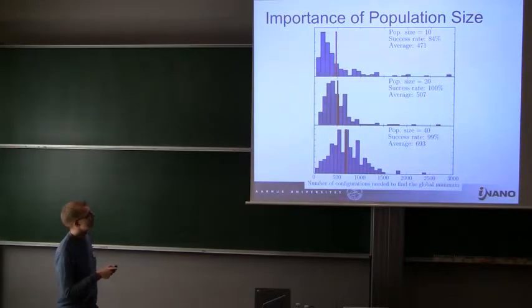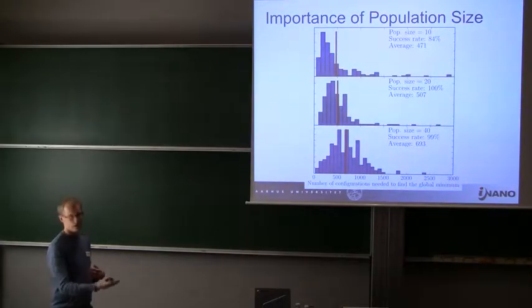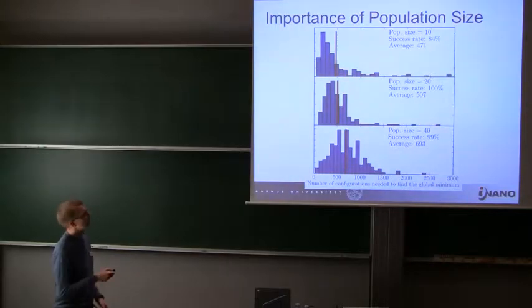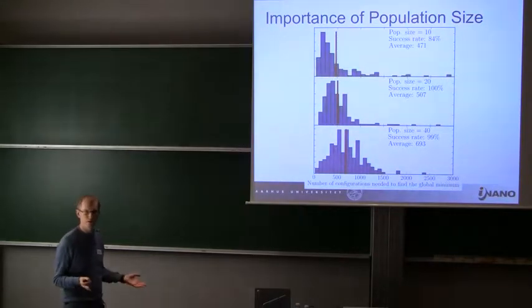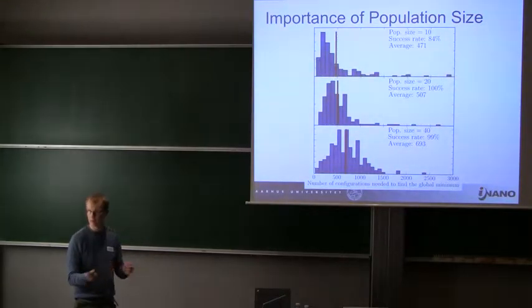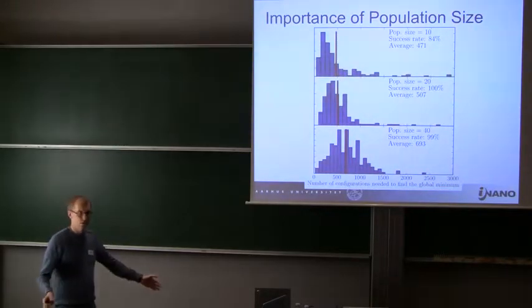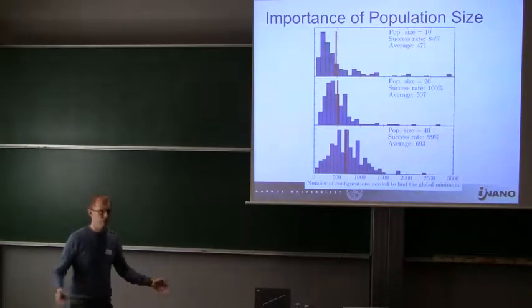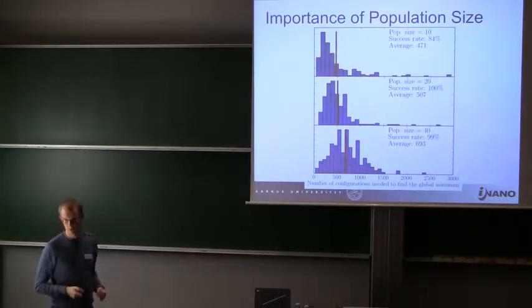Then we could go the other way and decrease the population size to 10 configurations. Now we see that the average actually goes down. We need less structures to progress in generation, but the success rate decreases. That means the population size of 10 configurations simply isn't big enough to have a diverse enough number of configurations to get to the global minimum. We need some broadness in the population to actually move forward. On the other hand, if it's too broad, it just takes longer.